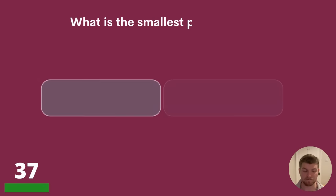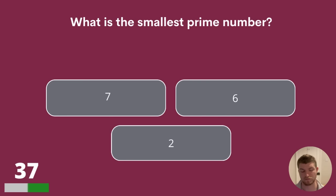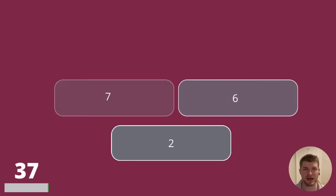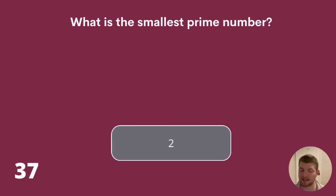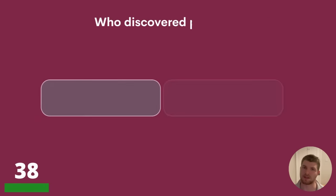Question 37. What is the smallest prime number? Is it 7, 6 or 2? Well, if a prime number is a number that can only be divided by one and itself, that would make the answer 2. The answer is 2.